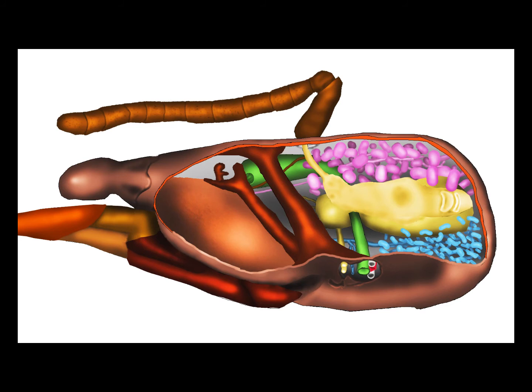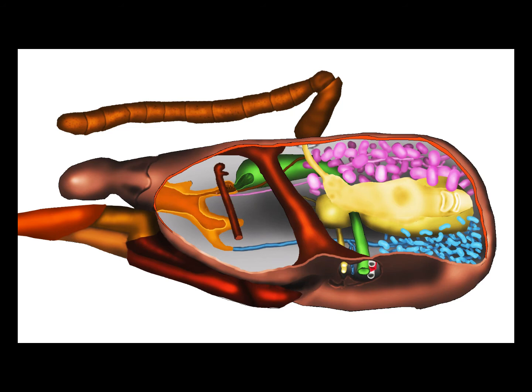If we remove the mandibular gland, we see the wall of the fossa. We will then remove three further structures: the strut that supports the cardo, the wall of the fossa, and finally the cardo itself. The lower part of the cardo and its articulations with the proboscis are not shown in this diagram.